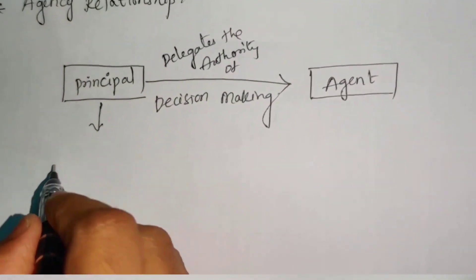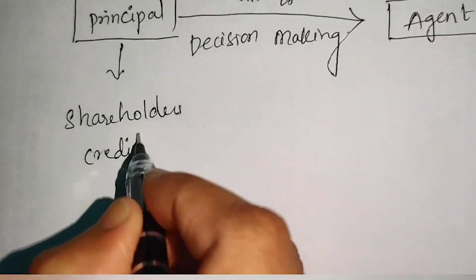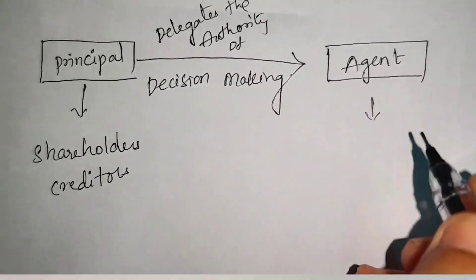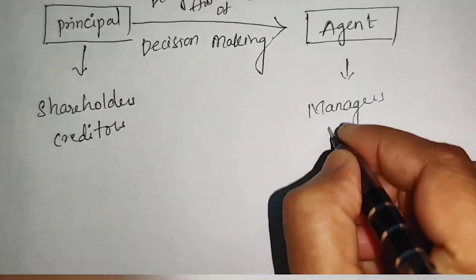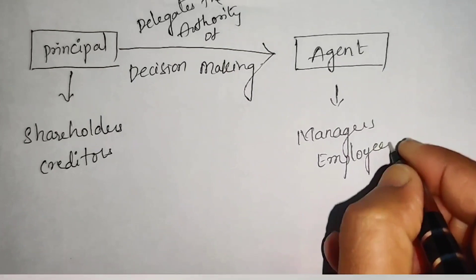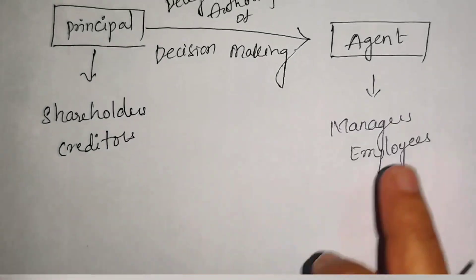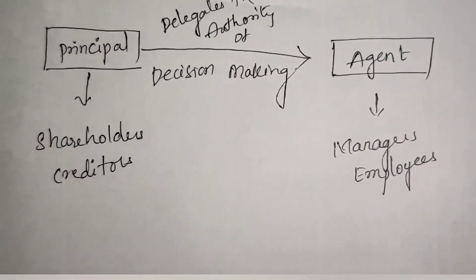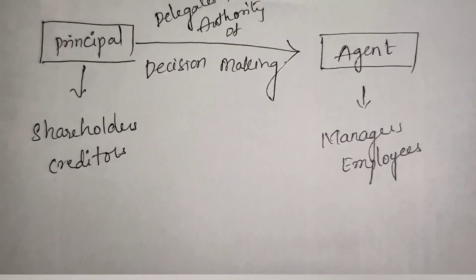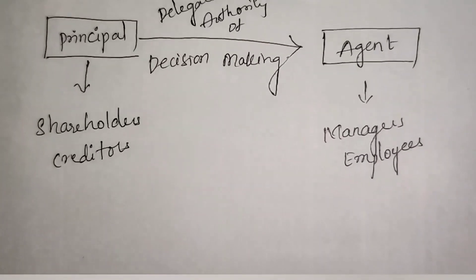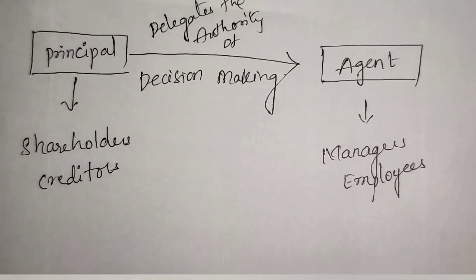Usually the principal comprises of shareholders or creditors, whereas the agent comprises of employees, managers and employees of the organization. The principal authorizes the agent to make decisions related to the organization, to run day-to-day activities and maximize their wealth. The principal expects that the agent should work in line with the principal's goals.